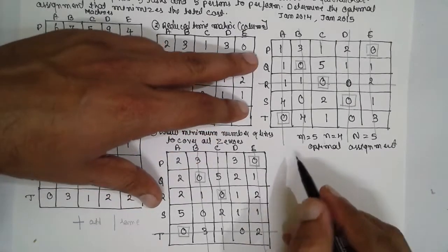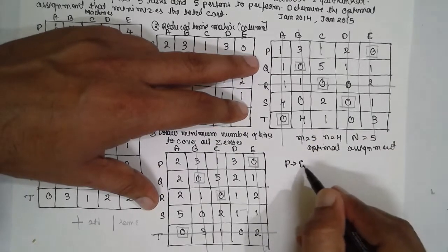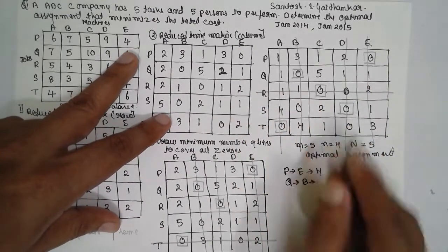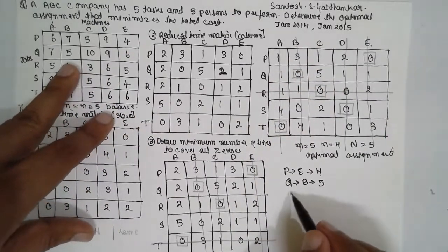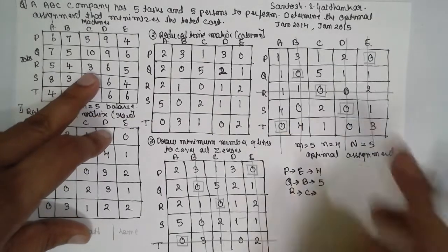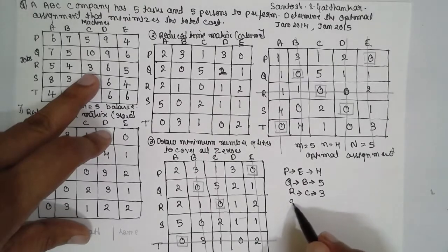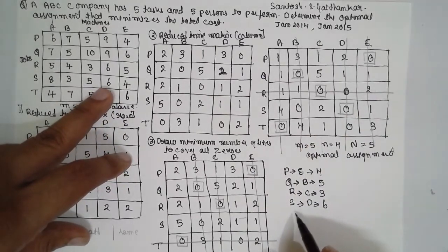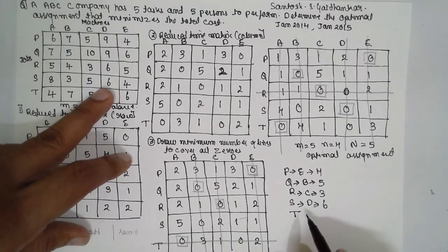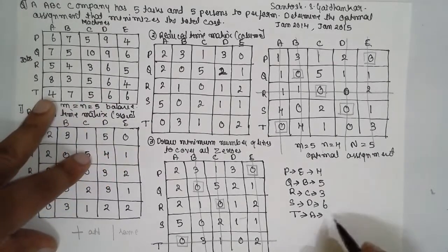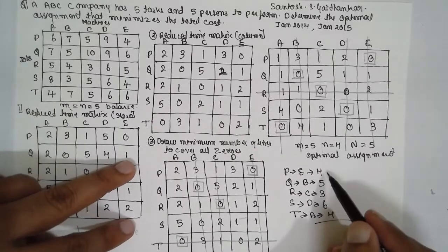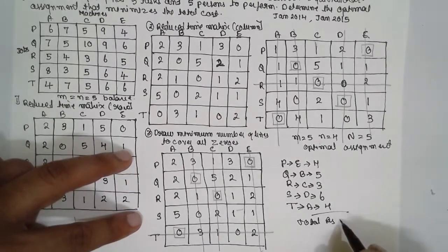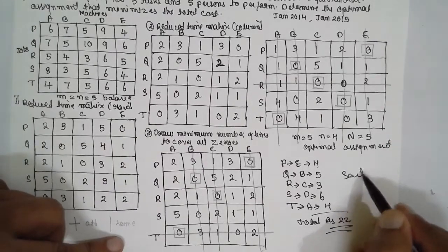Now find out the answer. For P it is E, the original value is 4. For Q it is B, the original value is 5. R is C, original value is 3. S is D, original value is 6. For T it is A, original value is 4. 4, 5, 3, 6, 4, and total answer will be total rupees 22. In this way you have to solve the problem. I am Santosh Gaidankar, thank you very much.